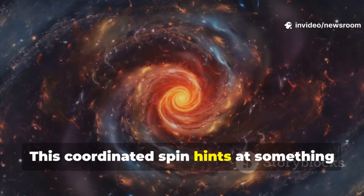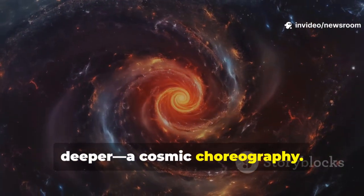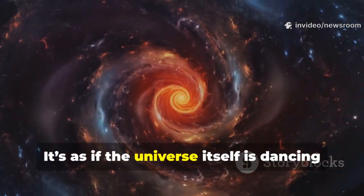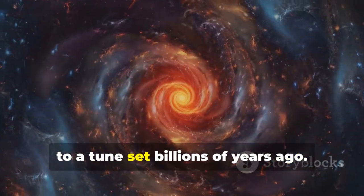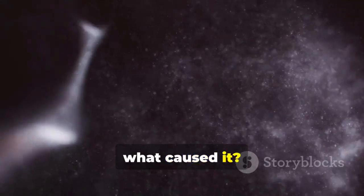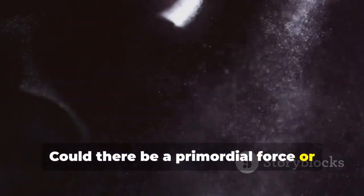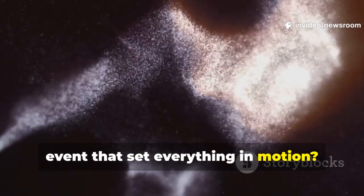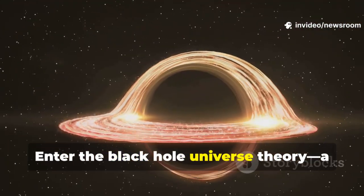This coordinated spin hints at something deeper, a cosmic choreography. It's as if the universe itself is dancing to a tune set billions of years ago. If the universe has a preferred direction, what caused it? Could there be a primordial force or event that set everything in motion? Enter the black hole universe theory.